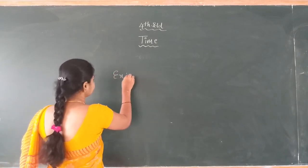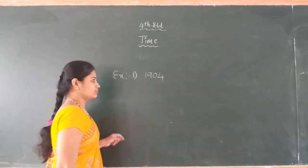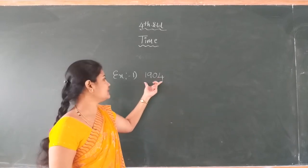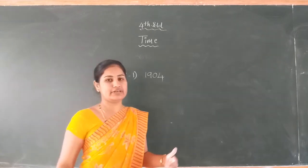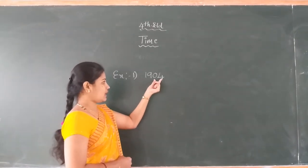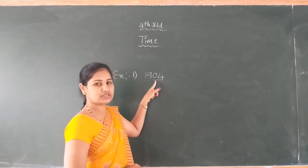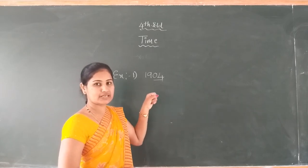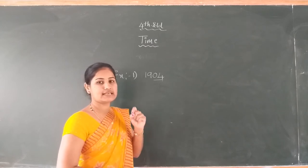Example 1: 1904. You find out whether this year is a leap year or not. How to find this — dear student, you observe the last two digits of this year. If the last two digits of the year are completely divisible by 4, it is a leap year. If the last two digits are not completely divisible by 4, that year is not a leap year.